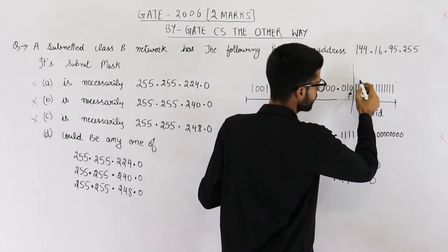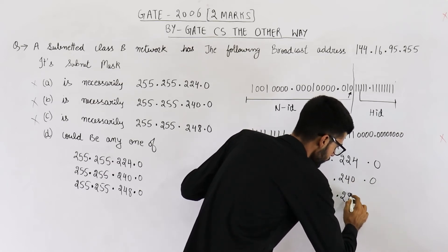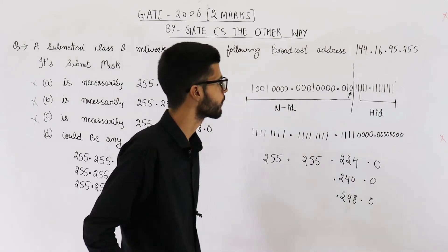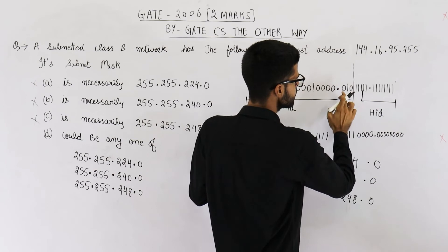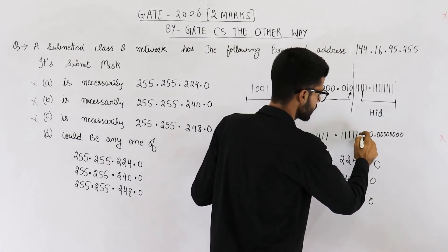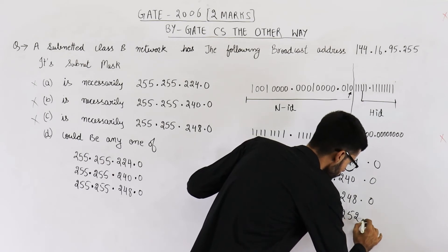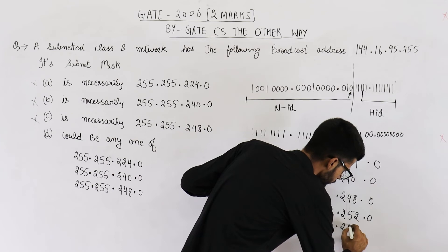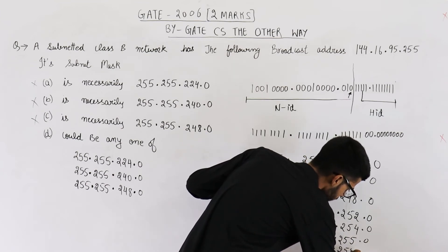It could also be possible that the host ID starts even further, giving a subnet mask of 255.255.248.0. Or if the network ID takes 6 bits from that octet — 1, 2, 3, 4, 5, 6 — that gives 252, so 255.255.252.0. And so on — the subnet mask could be 255.255.254.0, 255.255.255.0, or even 255.255.255.128.